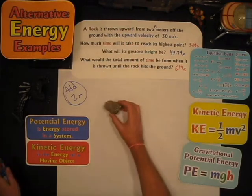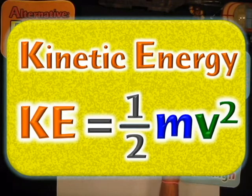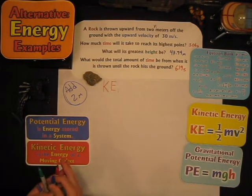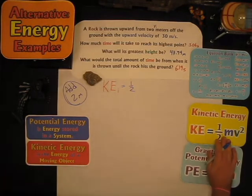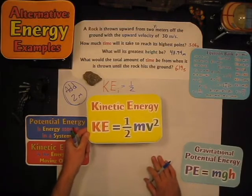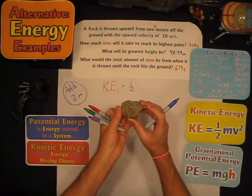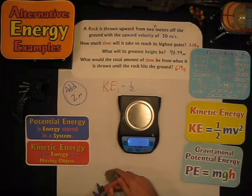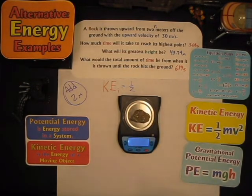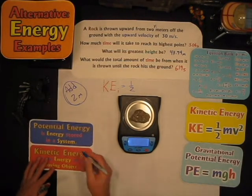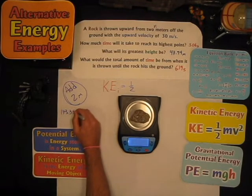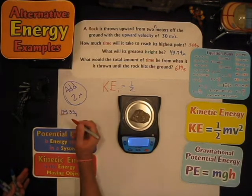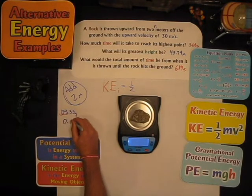Okay, the rock is thrown upward, so we're going to use the kinetic energy equation to find its initial kinetic energy. What's the mass of this rock? It doesn't tell me in the problem, so I'm going to measure it. Turning on the balance — it's zeroed. I'll put the rock on: 173.35 grams. So that's 173.35 grams. To convert to kilograms, divide by 1,000 — move the decimal three places — and we get 0.173 kg.